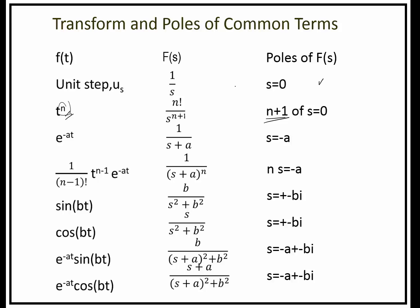For the exponential function, it translates to a very simple fraction, 1 over S plus A. We have a pole of a real number, which could be positive or negative. Both sine and cosine represent a quadratic relation in the denominator for the S domain. You have imaginary poles for both sine and cosine.